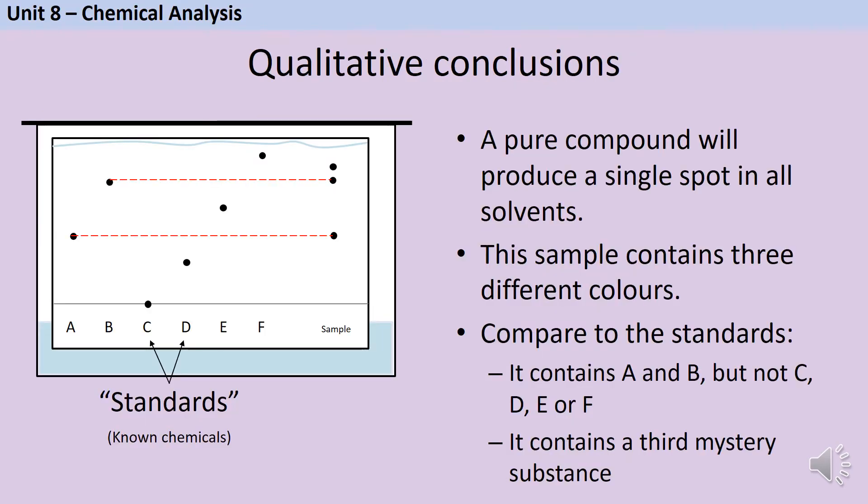We can analyze our results both qualitatively and quantitatively. In terms of the qualitative conclusions we can draw, we will do this by looking at the numbers of spots and comparing these to spots of the standards, those known chemicals where we know what they are. It's important to note that a pure element or a pure compound will produce a single spot in all solvents.